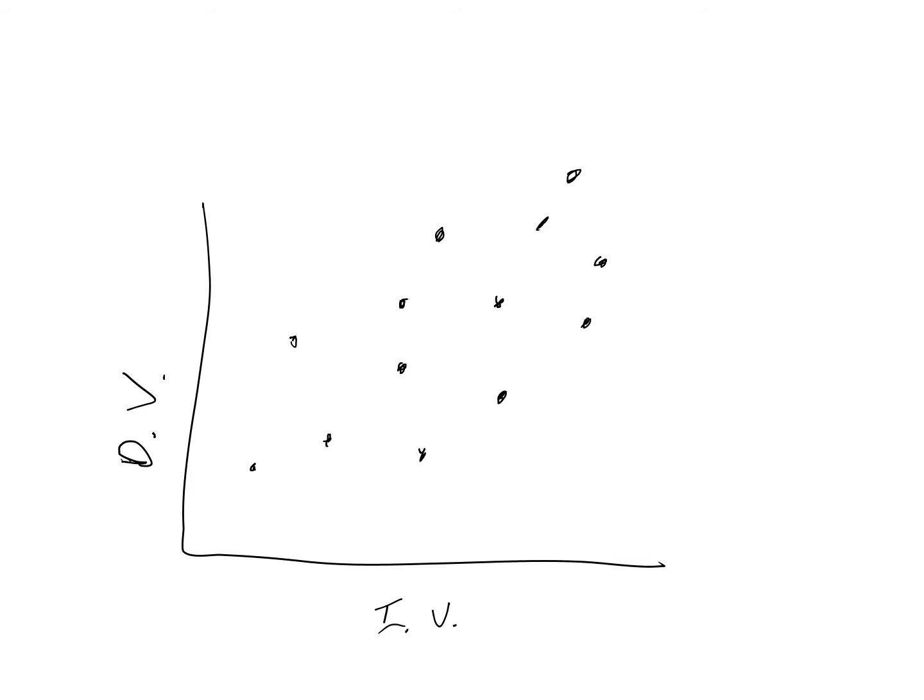Correlation is the extent to which the dependent and independent variable co-vary. In other words, what is the extent of a pattern in the scatter plot? In human research, if people who have higher values for the independent variable also tend to have higher values for the dependent variable, as shown here, we call this a positive correlation.